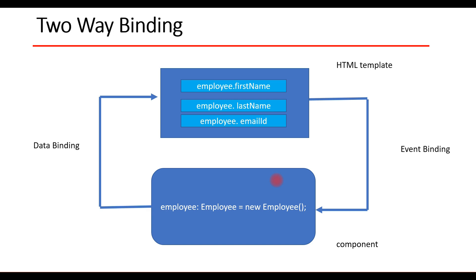Through this form we can add an employee. Before that, let's quickly look into two-way binding. Consider we have a form with first name, last name, and email ID. In the component class we have a property called employee, which is basically a TypeScript class containing the properties first name, last name, and email ID.